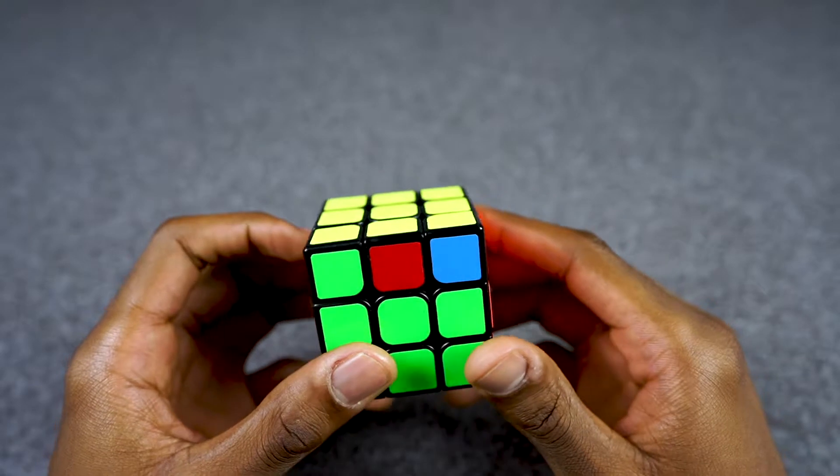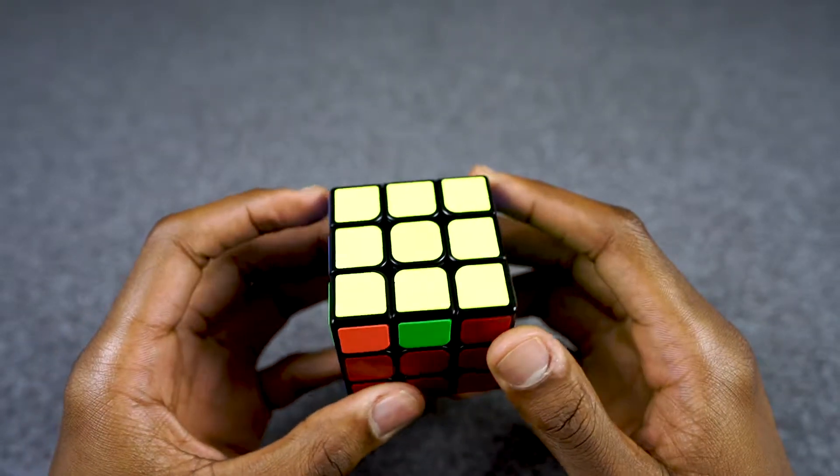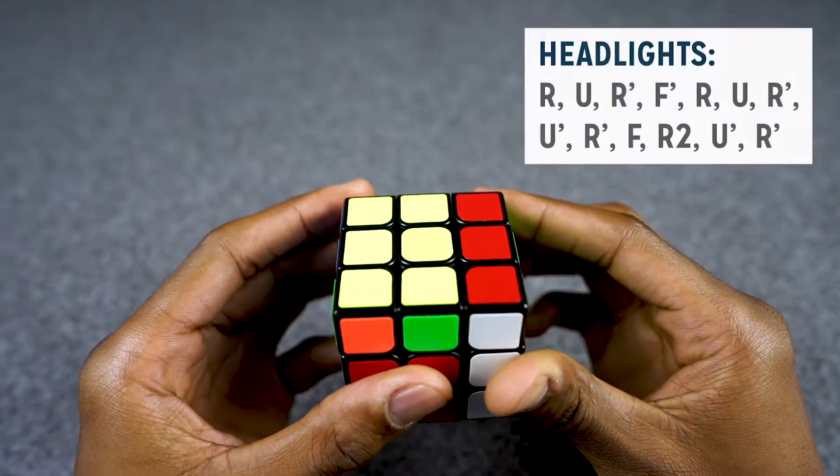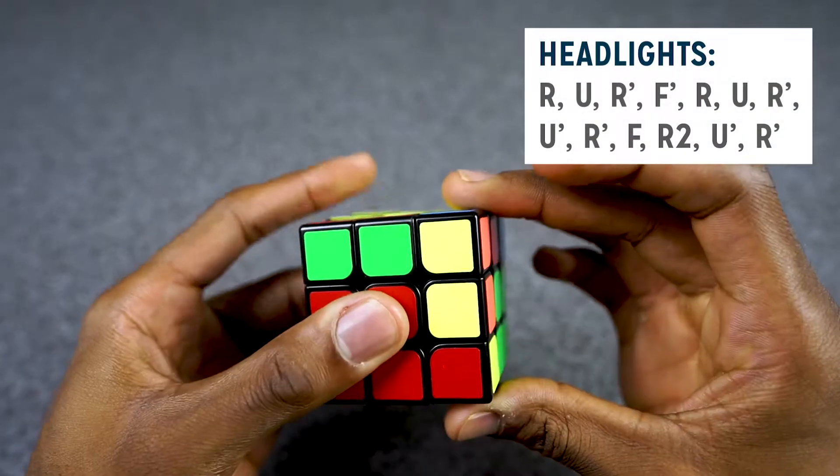What we're going to be doing is we're going to just execute the algorithm anywhere and then make some headlights appear. The algorithm goes like this: R, U, R prime...